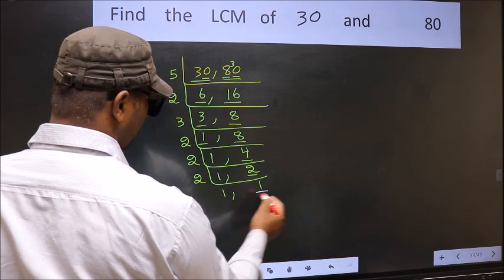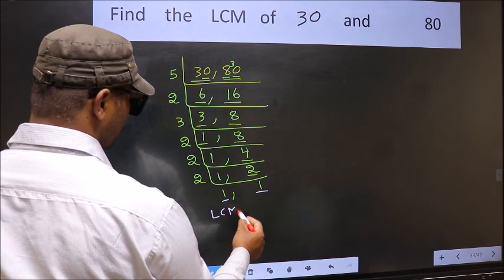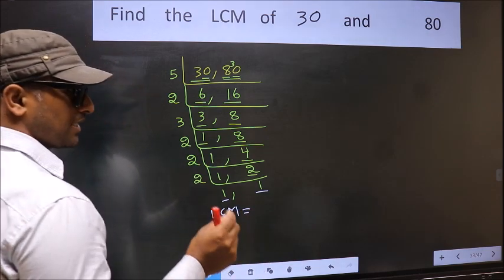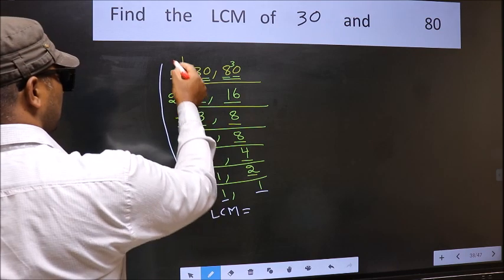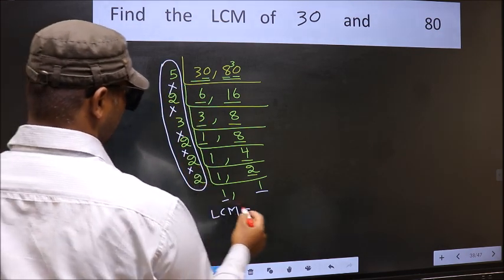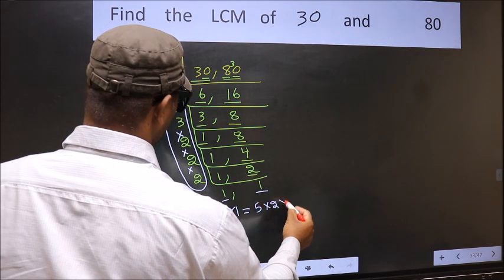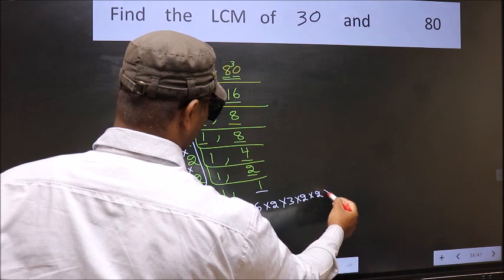So we got 1 in both the places. So our LCM is the product of these numbers. That is 5 into 2 into 3 into 2 into 2 into 2.